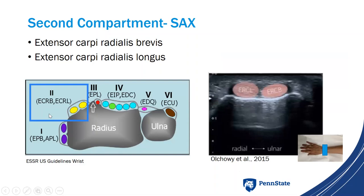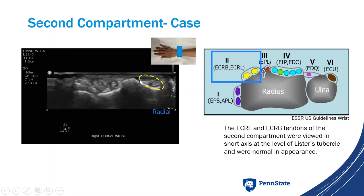Moving on to the second compartment — this is where we look at the extensor carpi radialis longus and extensor carpi radialis brevis. In short axis you'll see two tendons sitting over the radius, with Lister's tubercle just ulnar to them. For our patient, with Lister's tubercle identified and the second compartment visible, those two tendons were viewed in short axis at the level of Lister's tubercle and were normal in appearance.